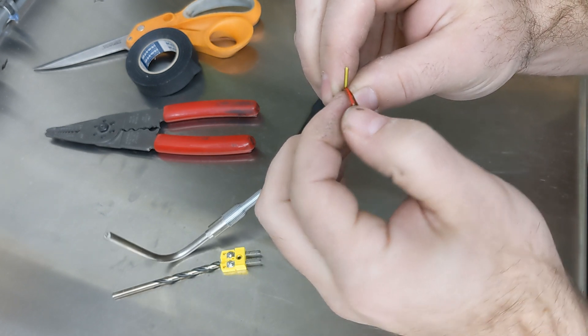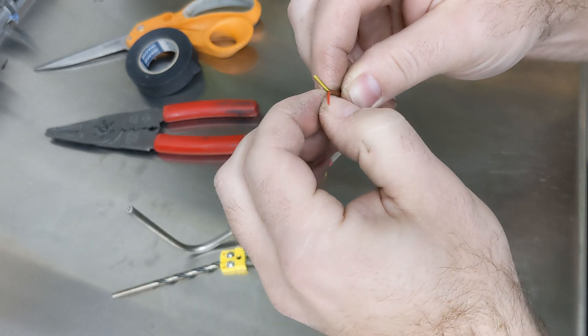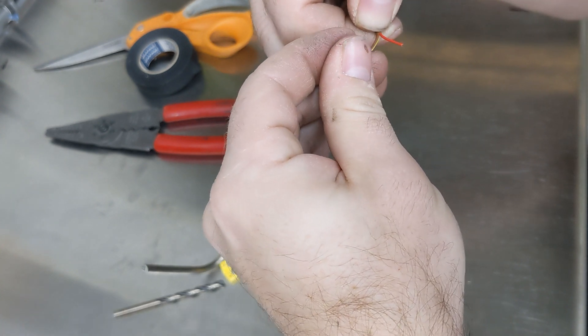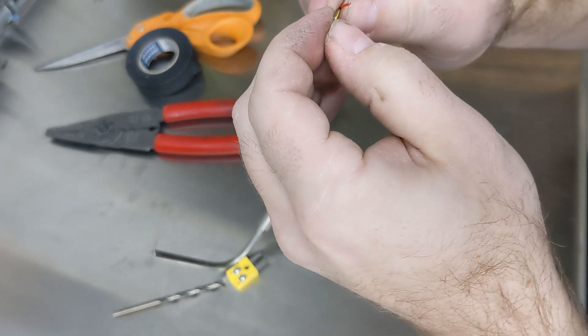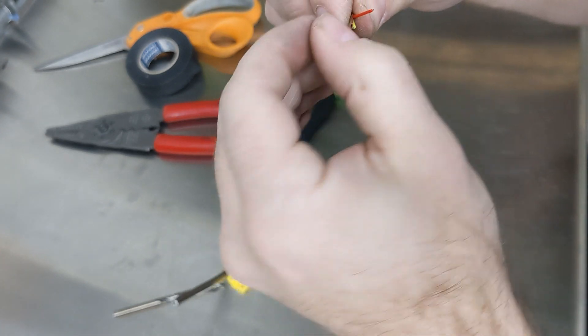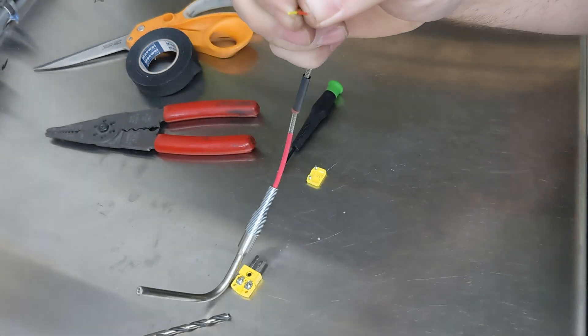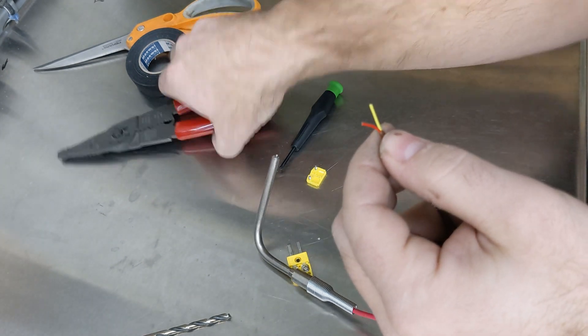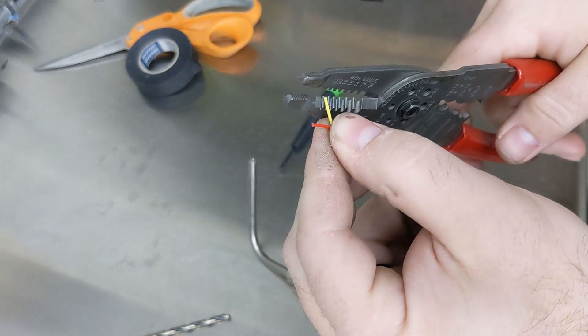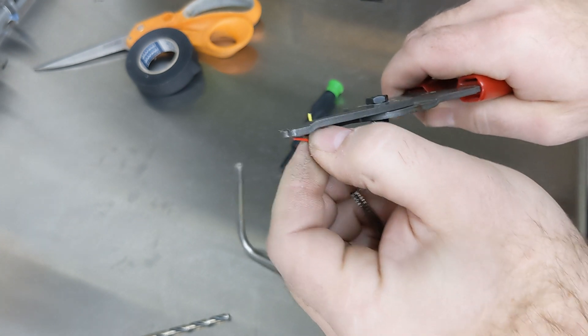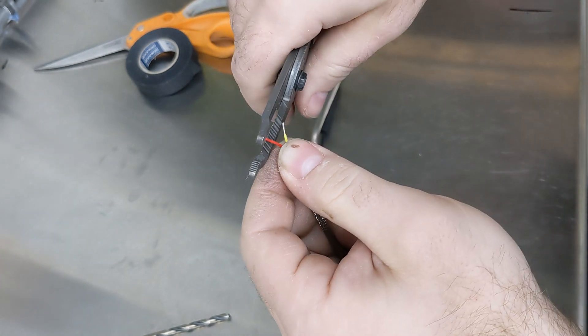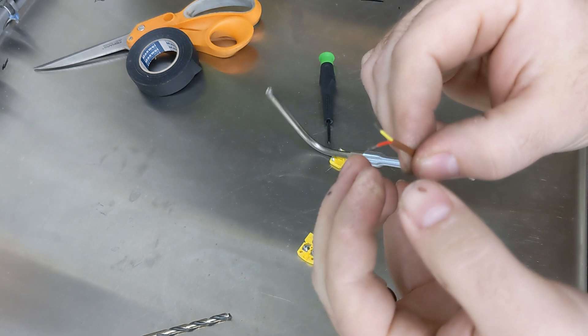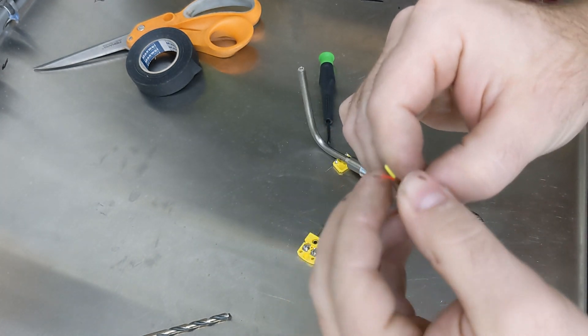Once you have those exposed, take the shielding off. This stuff's super soft so you can just tear it right off, you don't need to cut it. Now you have yellow wire and a red wire. Strip both of those. You only need about three-sixteenths of an inch or so stripped, not a ton. There's your two wires.